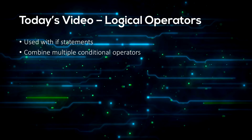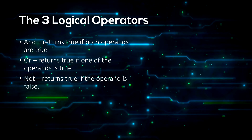Finally, we have logical operators. These are used in if statements to combine two or more comparison operators. They are: and, or, and not. And returns true if both operands are true. Or returns true if either operand is true. Not only requires one operand and returns true if the operand is false.